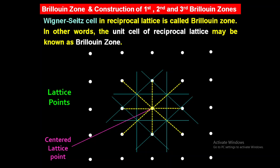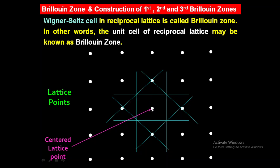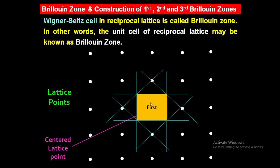If we remove the dashed lines, the area enclosed by the origin and the first Bragg plane is nothing but the first Brillouin zone. Moving from the origin to the first Bragg plane in any direction — upward, downward, left, or right — this boundary is the first Bragg plane. The area enclosed by the origin and the first Bragg plane is the first Brillouin zone.